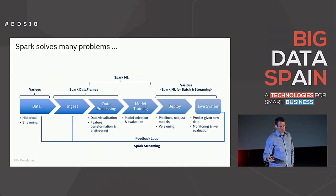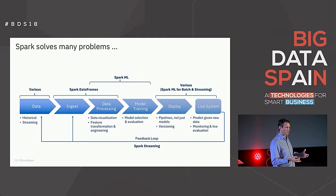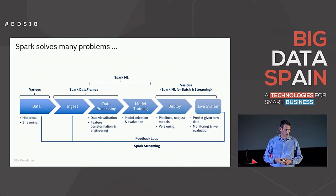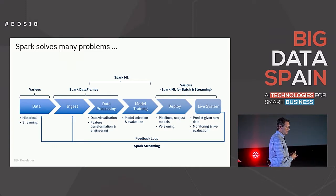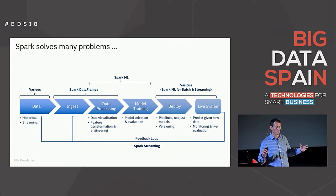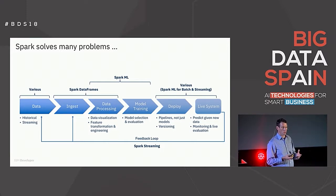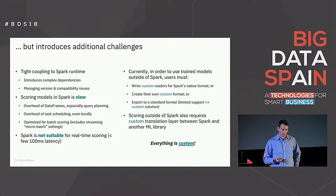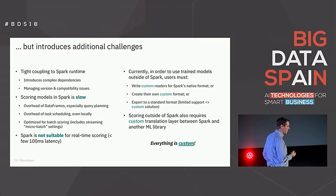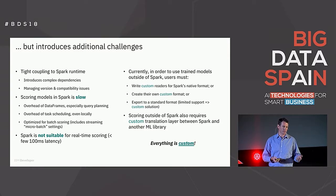This is a general talk on ML pipelines, but Spark is important here because it sparked the work we did in PFA export. Spark solves many problems — this can apply to other pipeline frameworks like scikit-learn — in that each component within Spark, Spark DataFrames, Spark ML, the streaming components, allow you to use one holistic system to manage all different parts of the pipeline, and all the different teams can use one set of APIs, which is really great. But it introduces additional challenges.